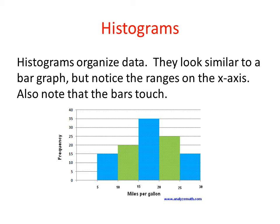Another way to organize data is in a histogram. A histogram looks very similar to bar graphs, but there are a few changes. If you look at the x-axis, where the miles per gallon are shown, you'll notice that the number increments are given in a range. For example, the first blue bar represents 5 to 10 miles per gallon, the green one shows 10 to 15, and the third shows 15 to 20, and so on. You'll also notice that on a histogram, the bars fill up the whole space and they touch one another.